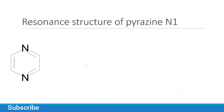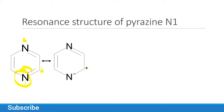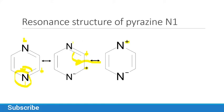If we talk about the resonance structure of pyrazine, we have two hetero atoms, N1 and N2. When one double bond shifts its electrons towards nitrogen, we have a positive charge on this side, as shown in this picture. Then these electrons will move towards this side and we have a positive charge here. When this bond moves here, we have a positive charge on nitrogen because it withdraws electrons from nitrogen.